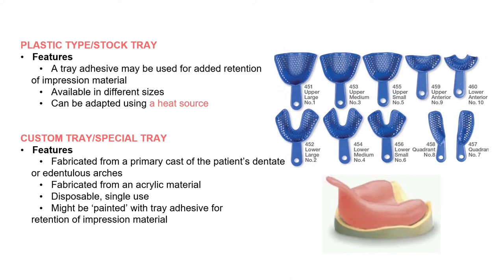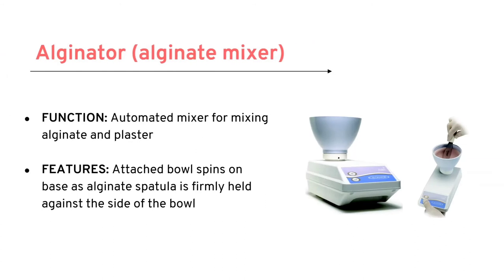The custom tray may be painted with adhesive for added retention. For taking an alginate impression, you can either use a bowl and spatula — taking it in proper proportion and rubbing it against the bowl until proper consistency — or you can use an alginate mixer machine, which gives a very homogeneous, granule-free, more accurate impression.